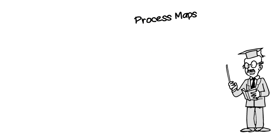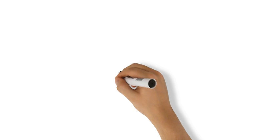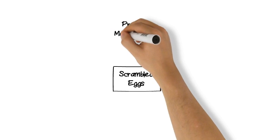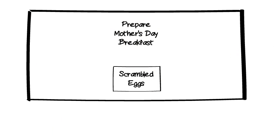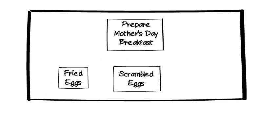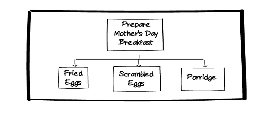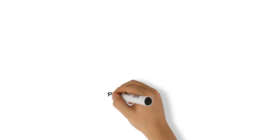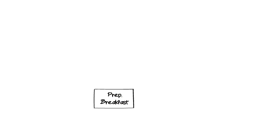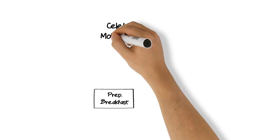Of course, your process does not exist in isolation but is part of a bigger whole, which in turn is part of a system. Thus, your process for making scrambled eggs is part of a documented procedure called preparing Mother's Day breakfast, which includes optional processes for making fried eggs and making porridge. In turn, preparing Mother's Day breakfast is just one documented procedure for a grand system called celebrating Mother's Day.